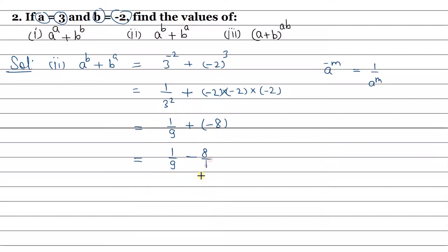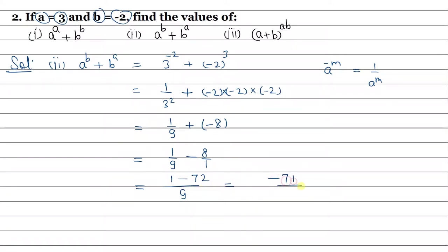Now we take the LCM, which is 9. So 1 upon 9 minus 8 upon 1 — LCM is 9. 9 times 8 gives 72, and 1 minus 72 gives minus 71. So the answer is minus 71 upon 9. This is your answer for the second part.